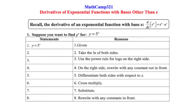Our first step is to take the natural log of both sides. Our next step is to use the power rule for logs on the right-hand side. Then we focus on the right-hand side and rewrite with the constant out in front. Now, ln5 — if you were to type it in on your calculator — is just a number, just a constant, so I'm going to write that out in front.